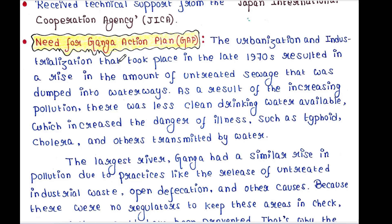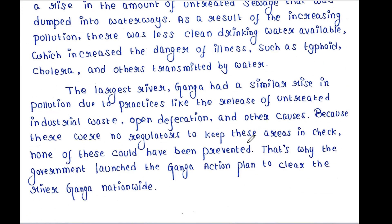As a result of increasing pollution, there was less clean drinking water available, which increased the danger of illnesses such as typhoid, cholera, and others transmitted by water. The largest river Ganga had a similar rise in pollution due to practices like the release of untreated industrial waste, open defecation, and other causes.